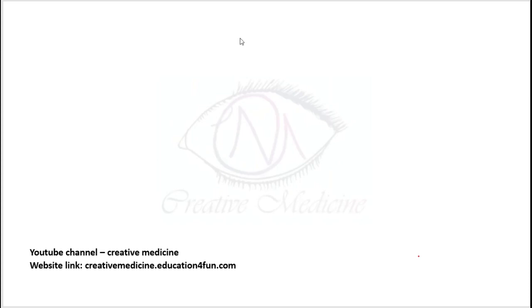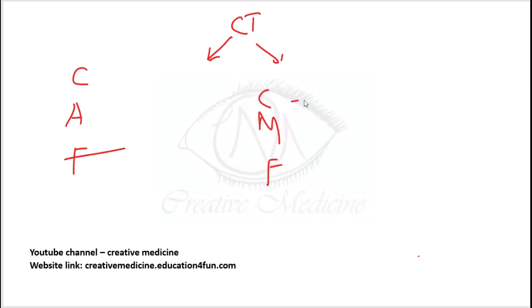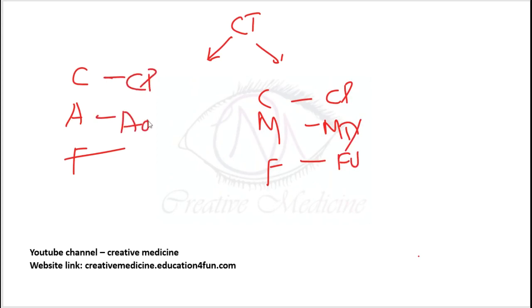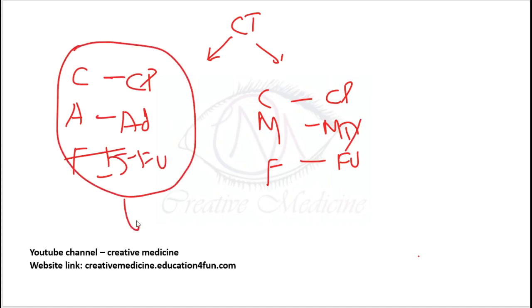First we will see the chemotherapeutic regimens. We have two types: CAF and CMF. CMF includes cyclophosphamide, methotrexate, and 5-fluorouracil, whereas CAF includes cyclophosphamide, adriamycin, and 5-fluorouracil. The CAF regimen is most important and most preferred for therapeutic use.